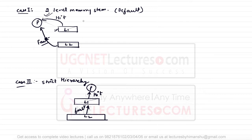The difference between the two cases: in Case 1 (default), on a miss in Level 1 we go directly to Level 2 and pass the data to the processor. In Case 2 (strict hierarchy), on a miss in Level 1 we first copy the data from Level 2 to Level 1, and then copy from Level 1 to the processor.